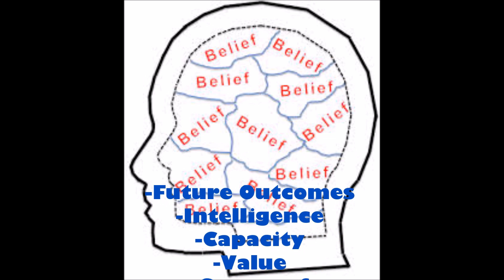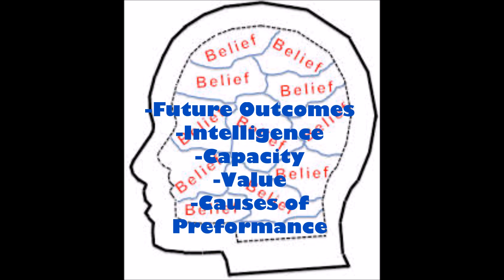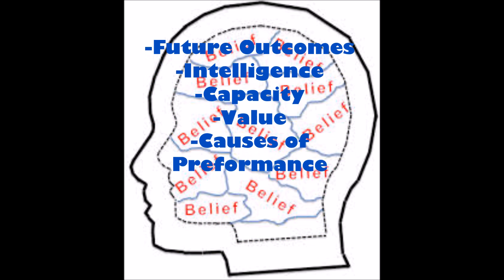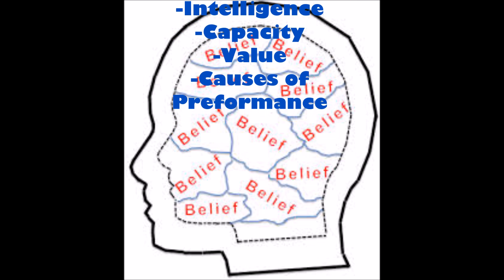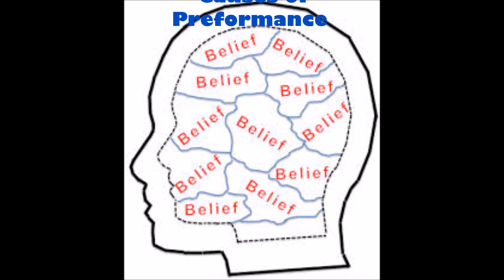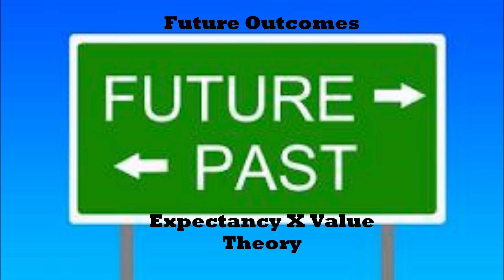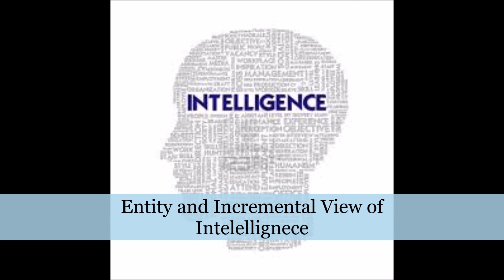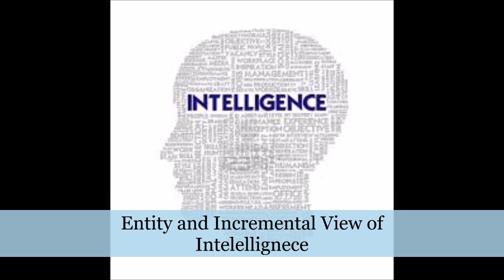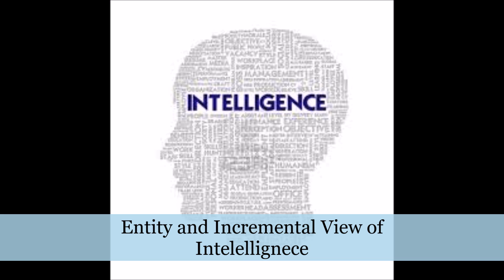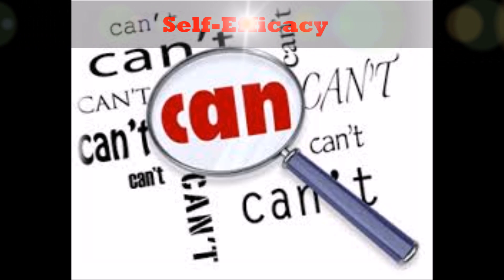Now let's talk about the influence of beliefs on motivation and learning. The beliefs we're going to talk about are beliefs about future outcomes, intelligence, capacity, value, and the causes of performance. The first is the expectancy-value theory, which states that a learner will be motivated to engage in a task to the extent that they expect to succeed on that task times the value they place on that success. Regarding intelligence, the entity view holds that intelligence is fixed — which can lead to learned helplessness — while the incremental view believes intelligence is caused by hard work and effort.